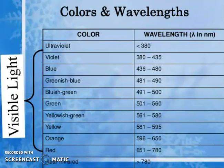Color and wavelength: ultraviolet (less than 380 nm), violet (380–435 nm), blue (436–480 nm), greenish-blue (481–490 nm), bluish-green (490–500 nm), green (501–560 nm), yellowish-green (561–580 nm), yellow (581–595 nm), orange (596–650 nm), red (651–780 nm), and infrared (greater than 780 nm).